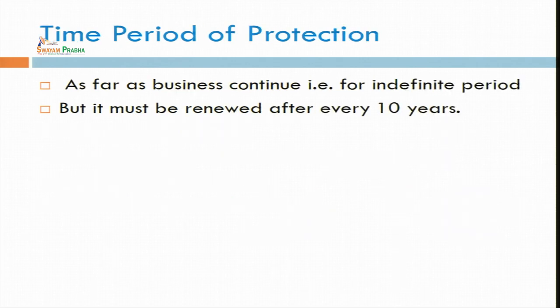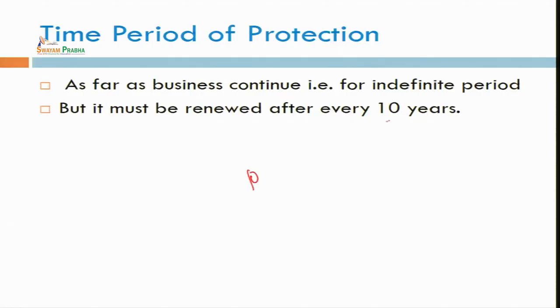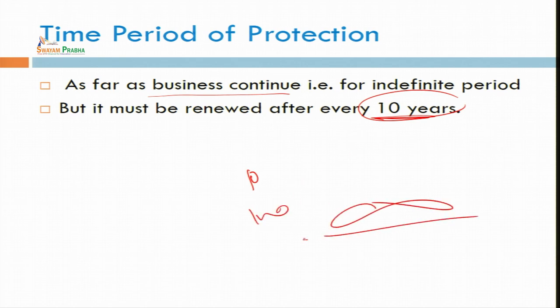What is the time period of protection of trademark? If we see examples like Reliance, Tata, or Coca-Cola — these have existed for the last 100, 150, or 200 years. How is this possible? You just have to renew your trademark after every 10 years. It may continue as far as your business continues — it may be for an indefinite period of time — but the only condition is you have to renew your trademark. Otherwise, it will go to the public domain and any other person can take that trademark and go for registration.